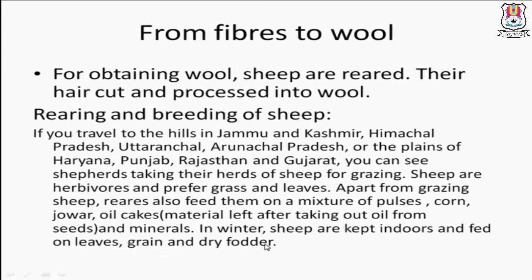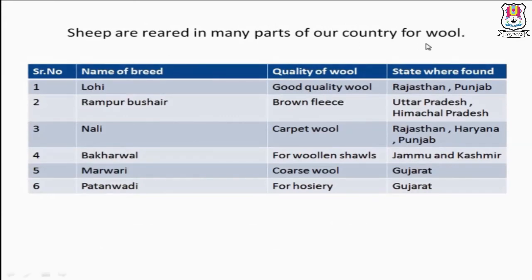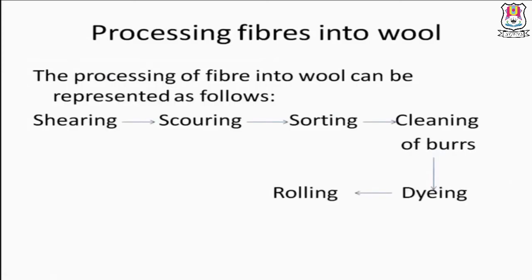In many parts of our country, different states have different breeds of sheep with different wool qualities. For example: Lohi — good quality wool — found in Rajasthan and Punjab; Rampur Bushair — brown fleece — found in Uttar Pradesh and Himachal Pradesh; Nali — carpet wool — Rajasthan, Haryana and Punjab; Bakharwal — wool for woolen shawls — Jammu and Kashmir; Marwari — coarse wool — Gujarat; Patanwadi — for hosiery — Gujarat.